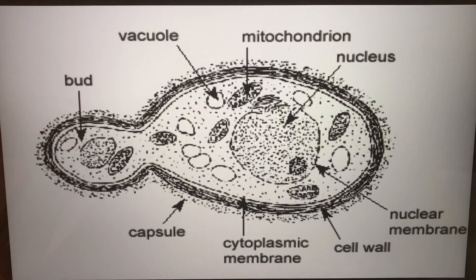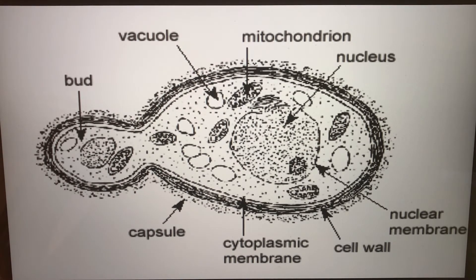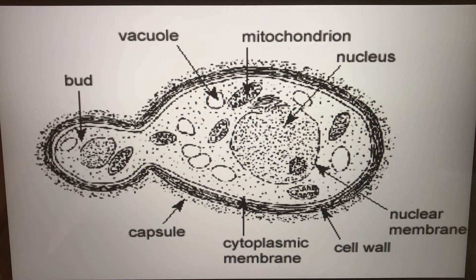Here is a rudimentary diagram of what a Saccharomyces cerevisiae cell looks like. It has organelles such as a vacuole, mitochondrion, and nucleus, and has a nuclear membrane, a cell wall, a cytoplasmic membrane, and a capsule. To the left we have something called a bud — a new cell that is breaking away from the mother cell. As you can see, it has its own nucleus, its own vacuole, and its own mitochondrion.